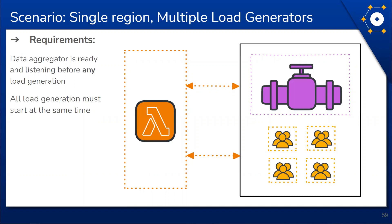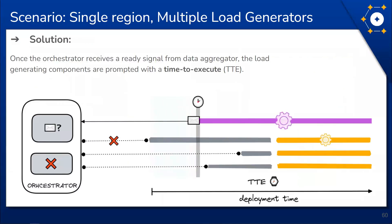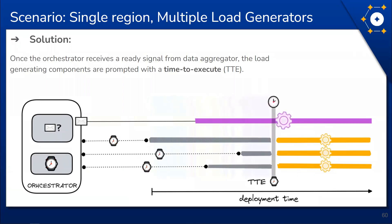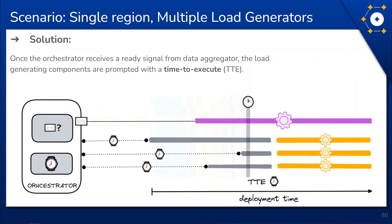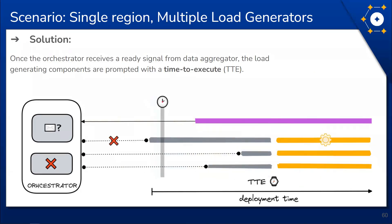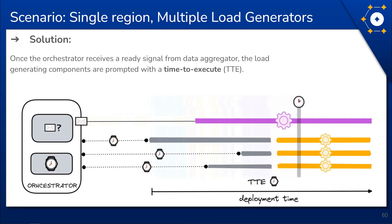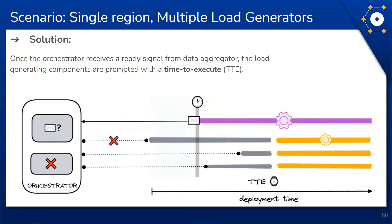In the second scenario, we now have multiple load generators. One requirement is that load generation should only execute once a data aggregator is ready; another is that all load generation should start at the same time across the distributed components. In the diagram we see three load generating components, which are ready at different points in time, but load generation is prevented from starting early. This blocking process eventually receives a Time-To-Execute, or TTE — represented as a watch in the diagram — indicating the point in time at which load generation starts. Since all load generators receive the same TTE, VU simulation is synchronized.